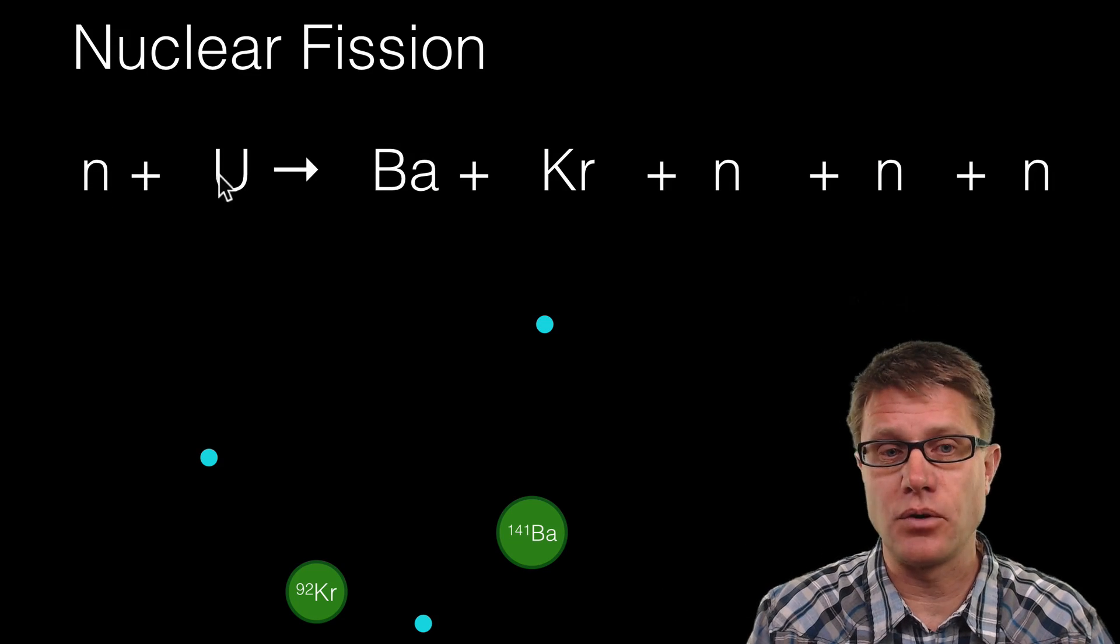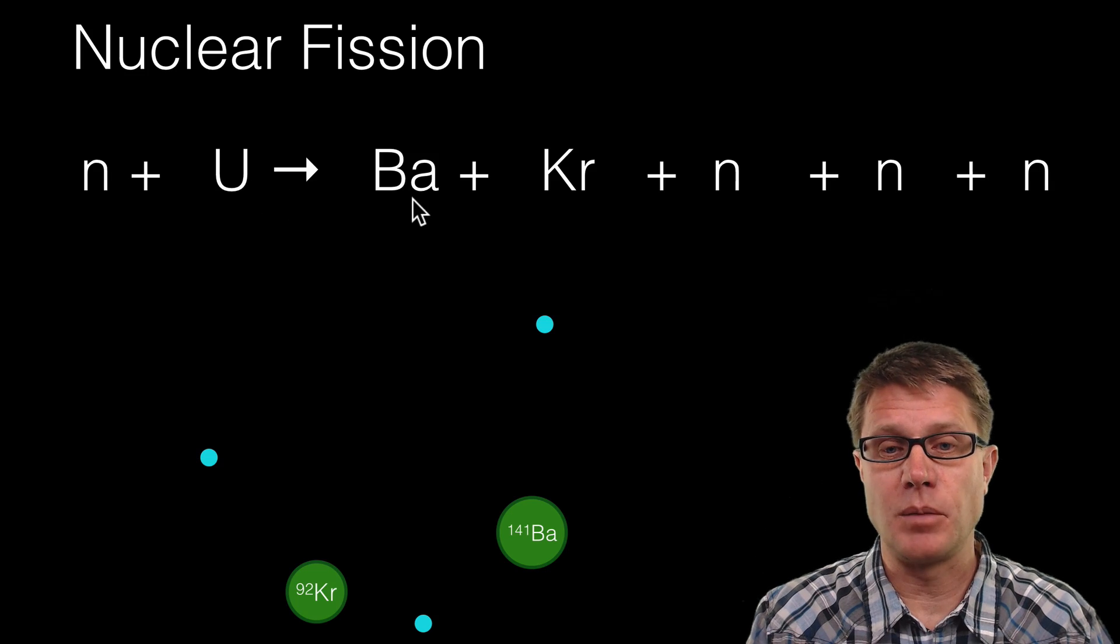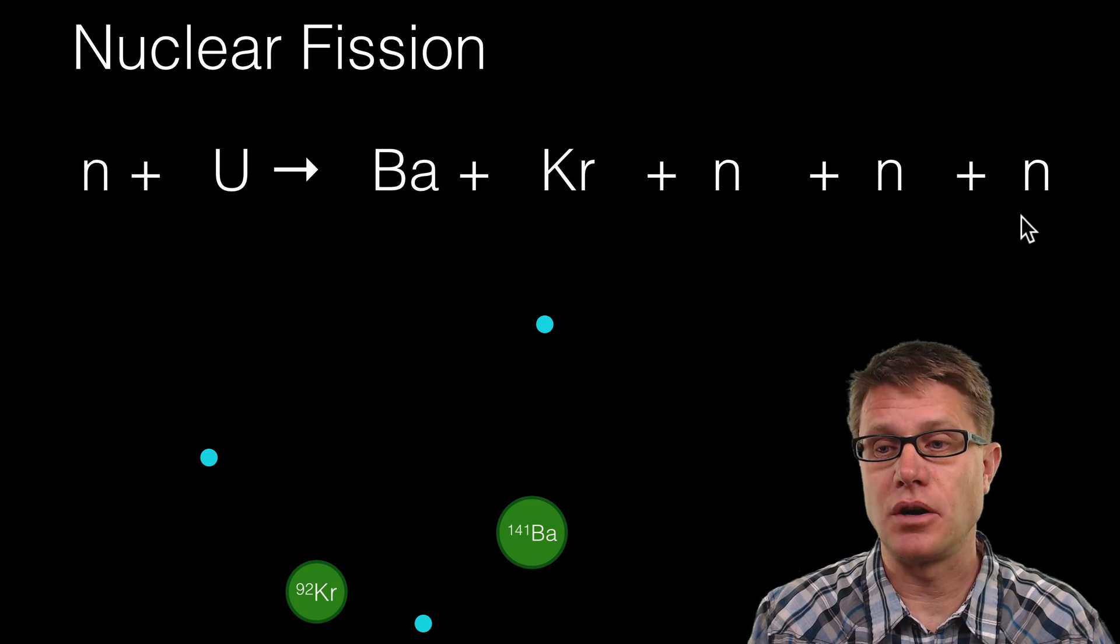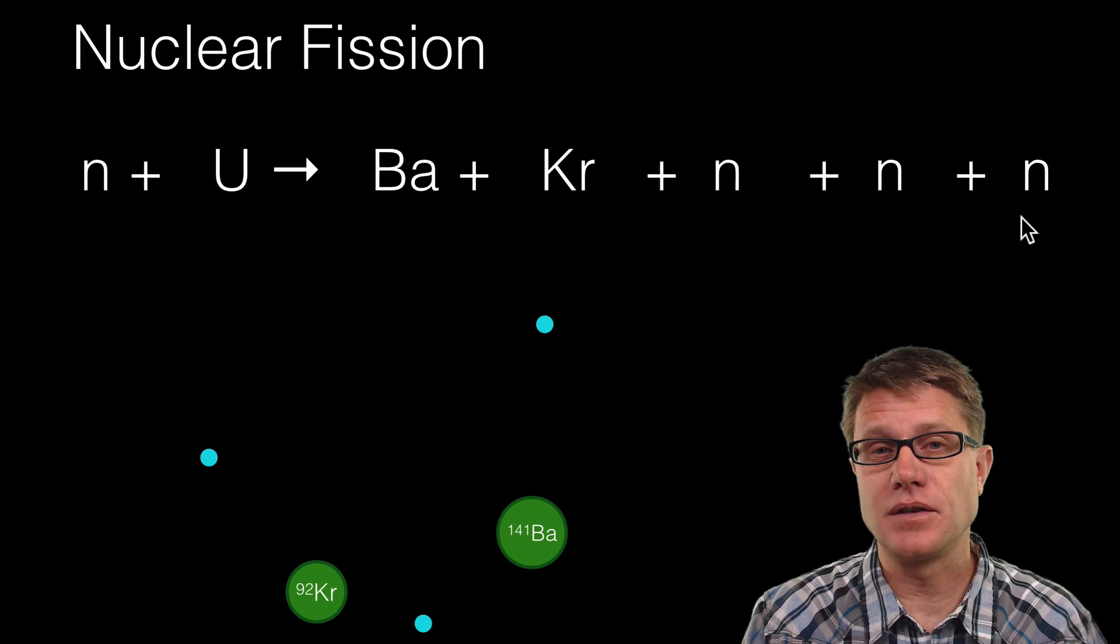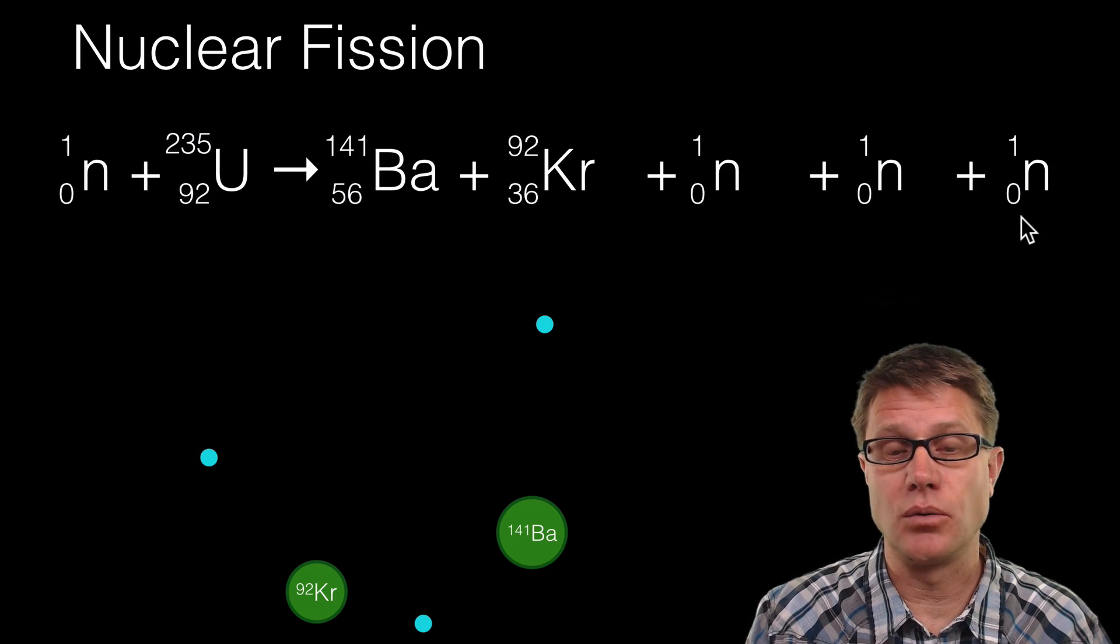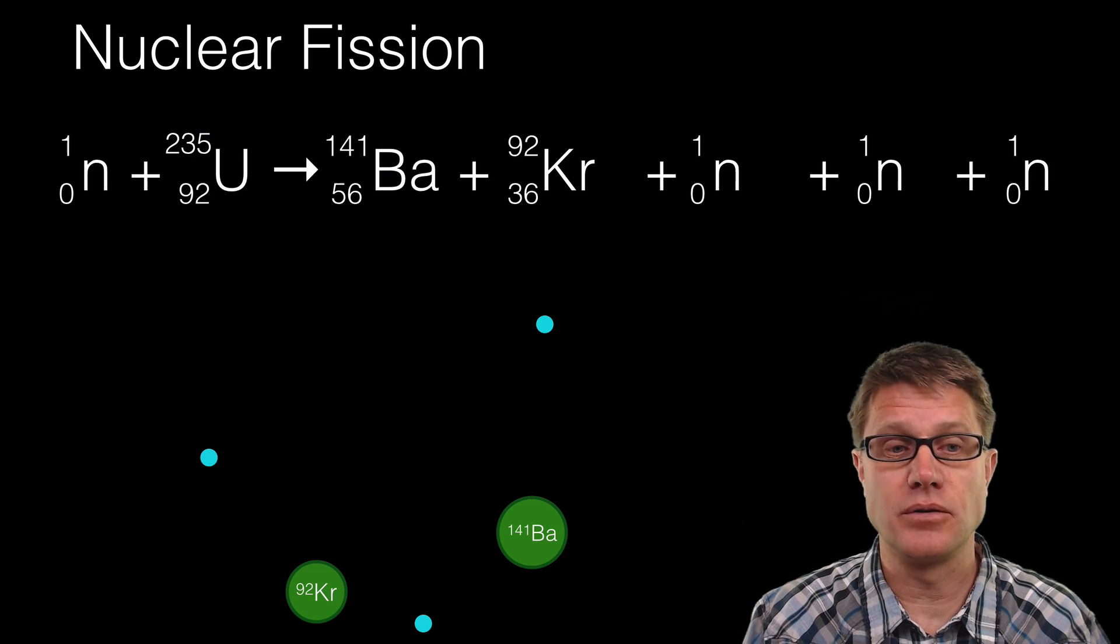So I have got my one neutron before and uranium before. Then I have got my barium krypton and my three neutrons after. We also have to see the charge and we have to see the nucleon number. So we will write those all out in AZX notation.